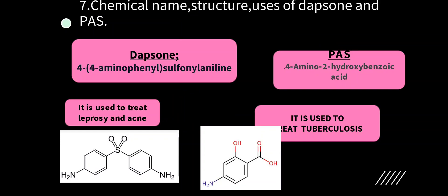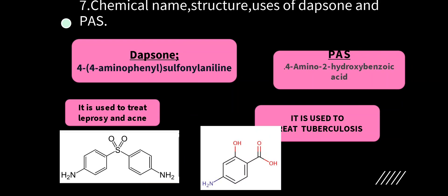Chemical name, structure and uses of dapsone and PAS. Dapsone chemical name: 4-(4-aminophenylsulfonyl)aniline. It is used to treat leprosy and acne. PAS (para-aminosalicylic acid) is used to treat tuberculosis. Chemical name of PAS: 4-amino-2-hydroxybenzoic acid. Very important — it is used to treat tuberculosis.